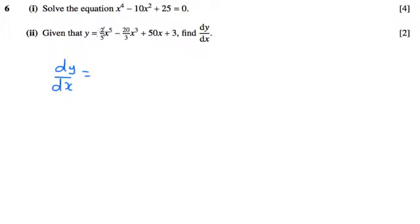So if we bring the power to the front here, we're going to get 5 times 2 over 5, x to the 4. I'm going to tidy all this up afterwards. I'm just going to make sure I get a method mark first.